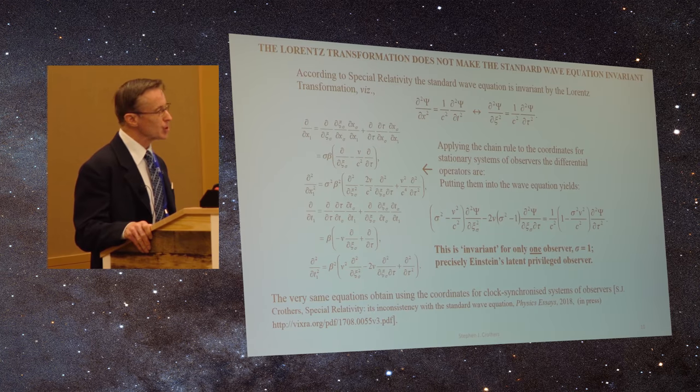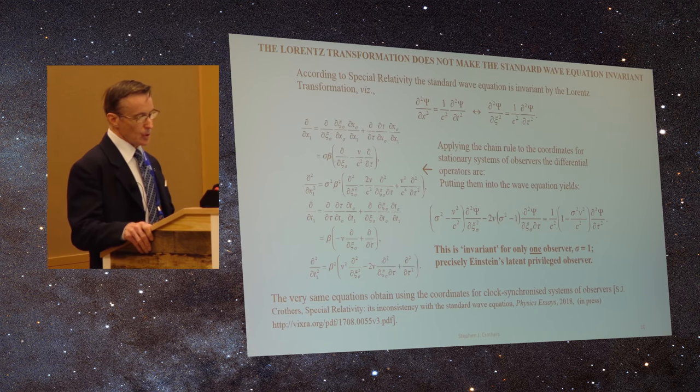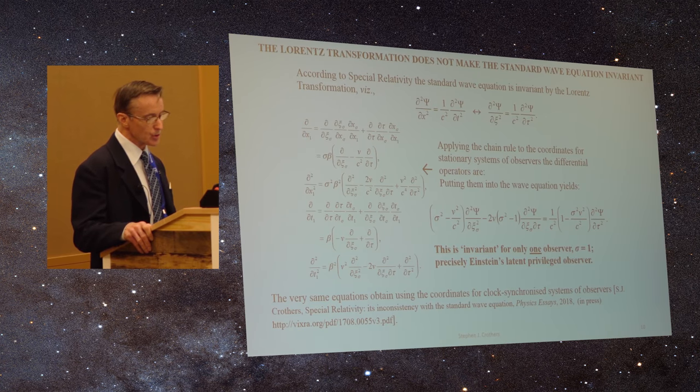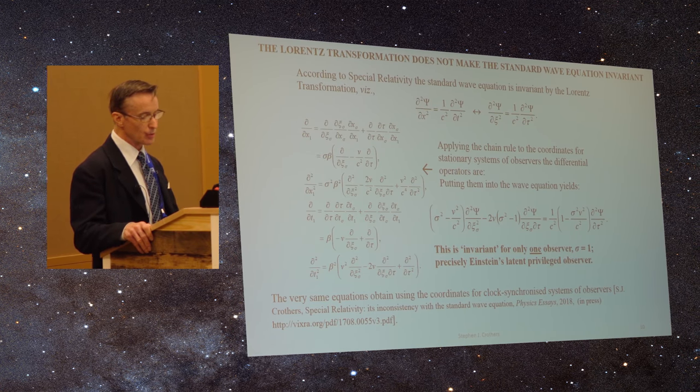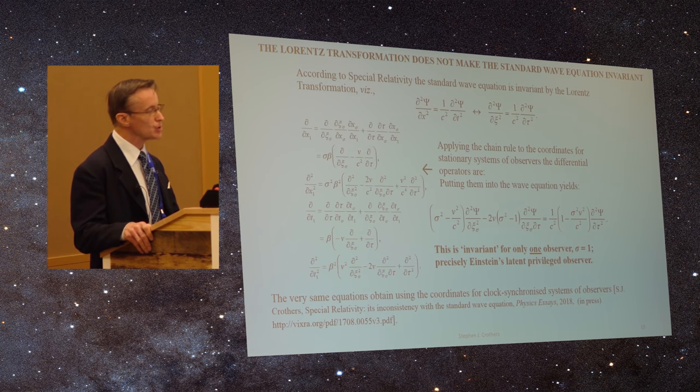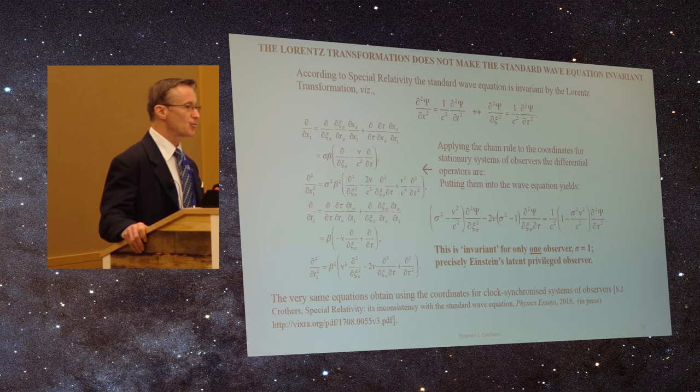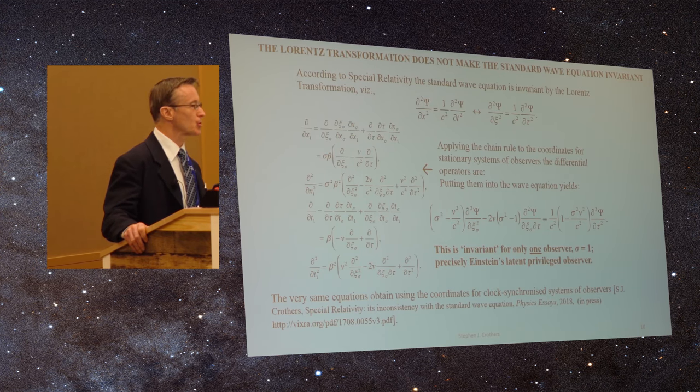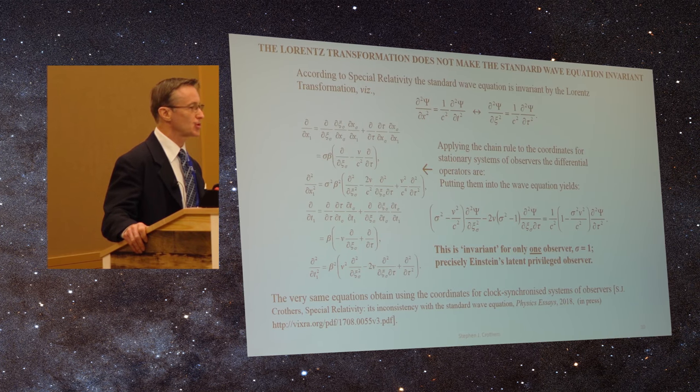We can go further now to the standard wave equation. On the left, we have the differential operators. And we find that if we equate these, putting these differential operators into the wave equation, we get this long expression in the centre. We note this is invariant only for one observer, sigma equals one. So the idea that the standard wave equation is invariant under Lorentz transformation is not true. It only happens for the privileged observer sigma equals one.